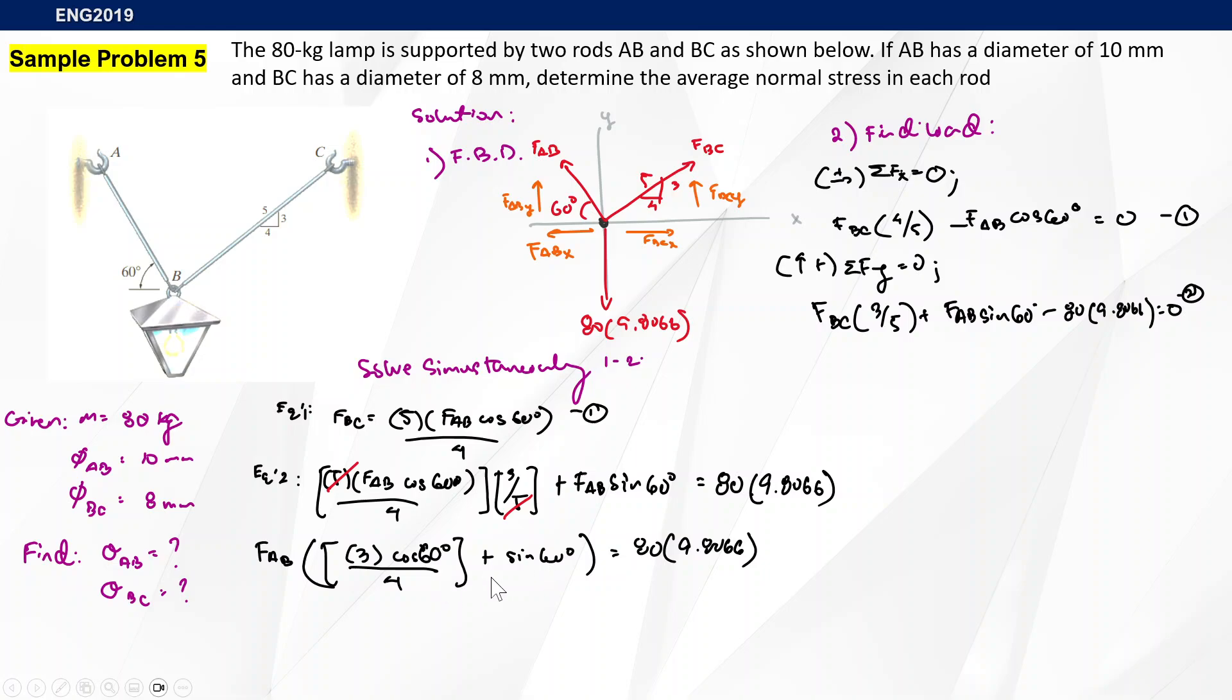Solving it, we will have FAB at 632.161 newtons. We simply substitute it to our previous equation to determine FBC, which is around 395.101 newtons.